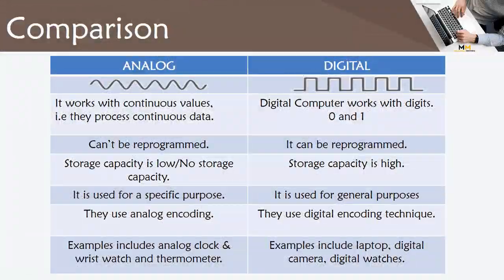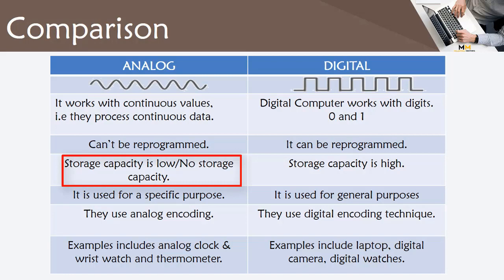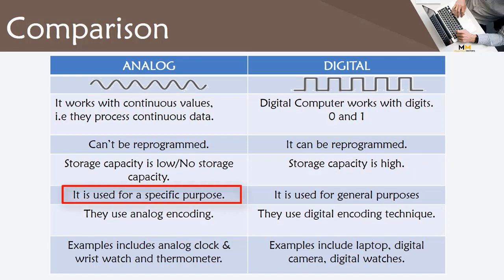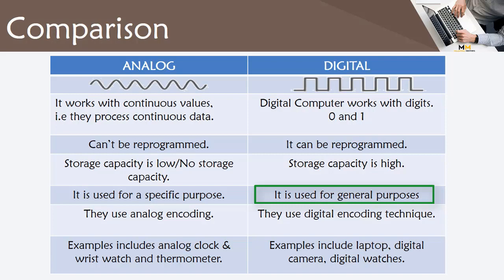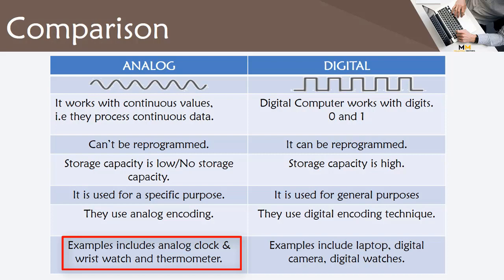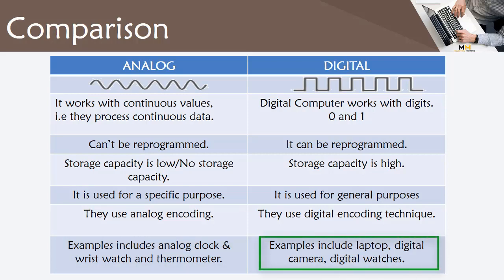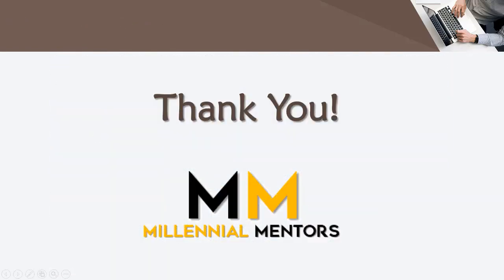Comparing analog and digital computers: Analog computers work with continuous values while digital computers work with binary digits — 0 and 1. Analog computers cannot be reprogrammed, but digital computers can. Analog computers have very low storage capacity, whereas digital computers have high storage capacity. Analog computers are used for specific purposes, while digital computers can be used for general or multiple tasks. Analog computers use analog encoding; digital computers use digital encoding. Common examples of analog computers are analog clocks, wristwatches, and thermometers. Examples of digital computers include laptops, digital cameras, and digital watches.